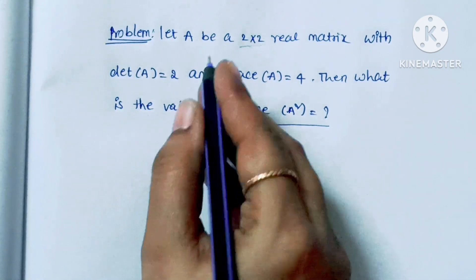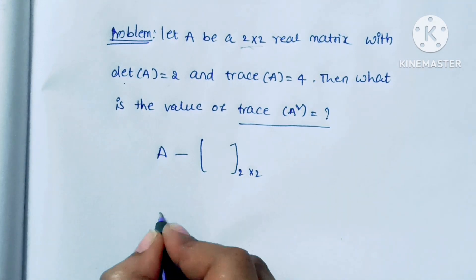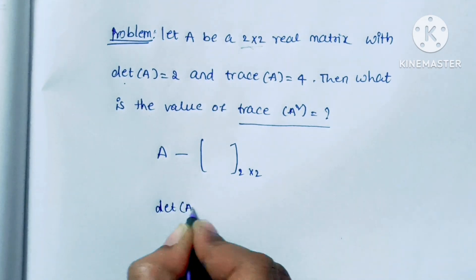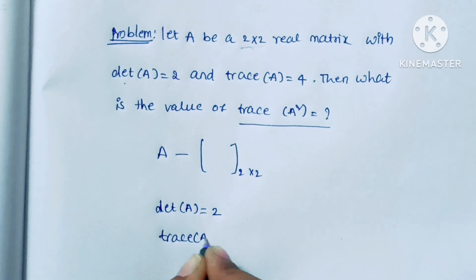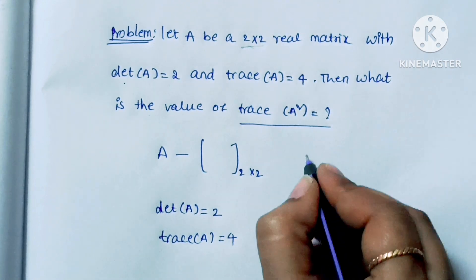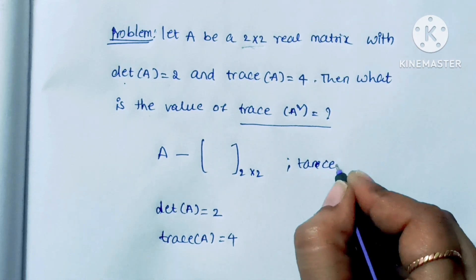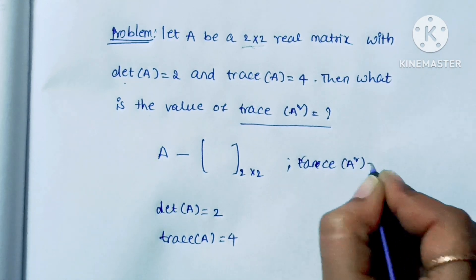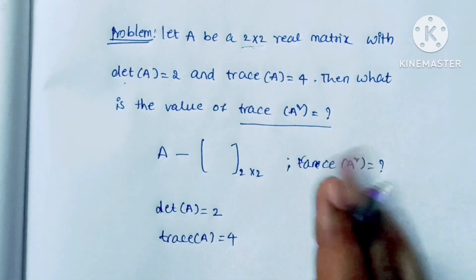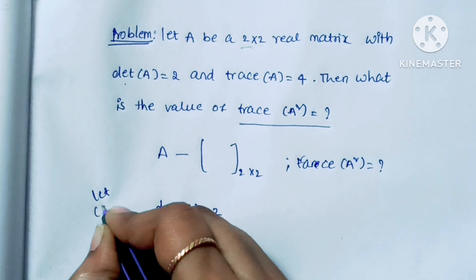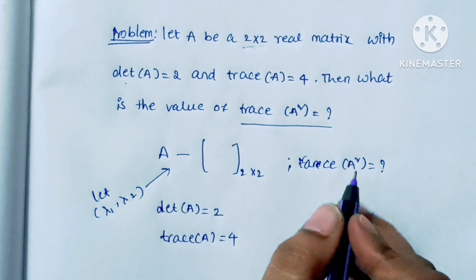They gave A, a real matrix of 2 by 2, and they give determinant of A which is equal to 2 and trace A equal to 4, and they are asking to find what is the trace of A square. We will take lambda 1 and lambda 2 as the eigenvalues of this 2 by 2 matrix.